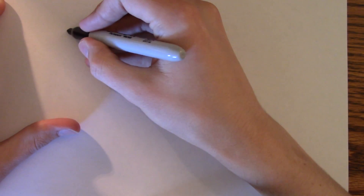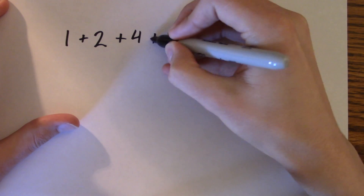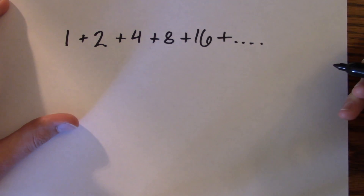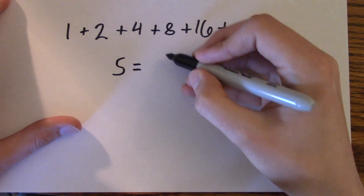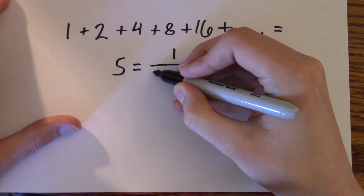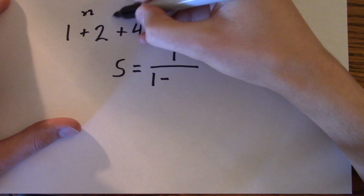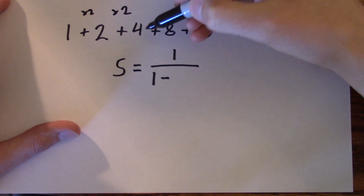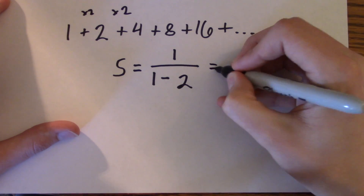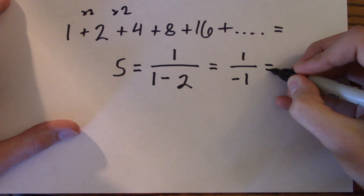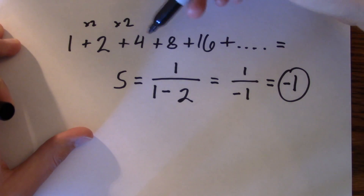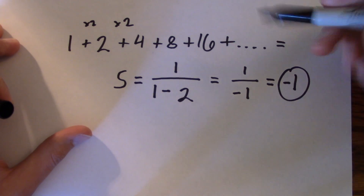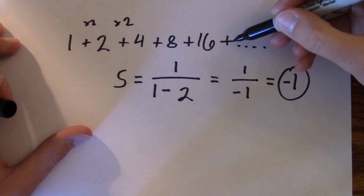But what happens if we look at the sum of 1 plus 2 plus 4 plus 8 plus 16, adding powers of 2? Looking at the formula, this should equal the first term, 1, divided by 1 minus the rate. Every new number is multiplied by 2, so the rate is 2. This gives us 1 over 1 minus 2, which is negative 1. Now obviously this can't be true — if I keep adding terms, this just blows up to infinity. And yet this formula is telling us the answer is negative 1.